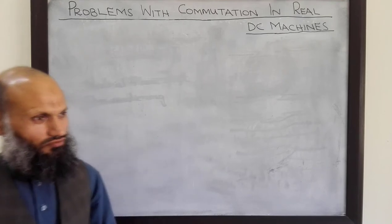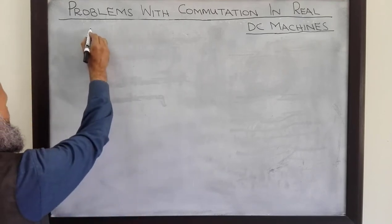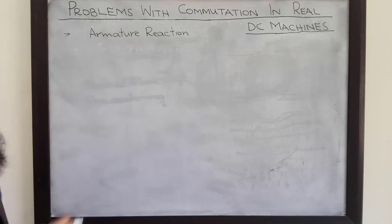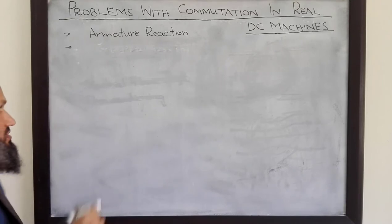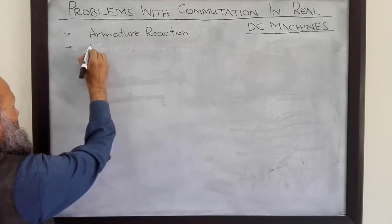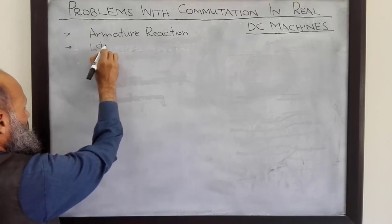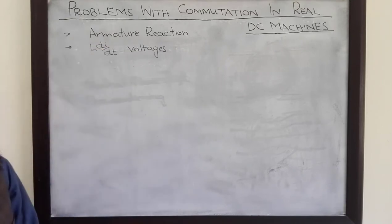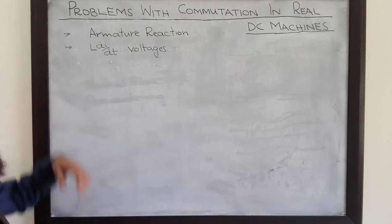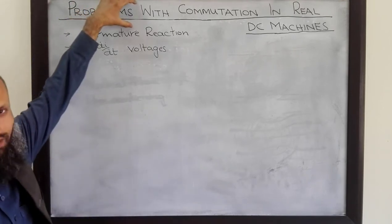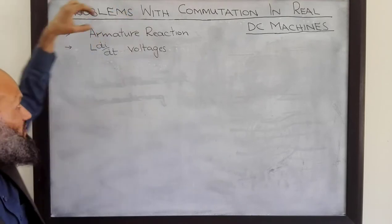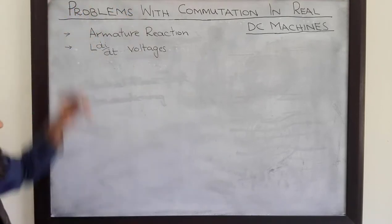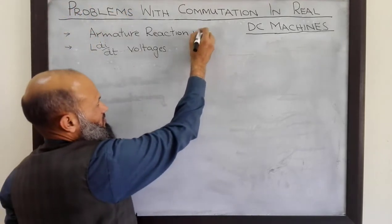The first important problem is the armature reaction. The second problem associated with commutation in DC machines is L·dI/dt voltages. In today's lecture, we shall talk about the first problem associated with commutation in real DC machines — that is, we shall talk about armature reaction.